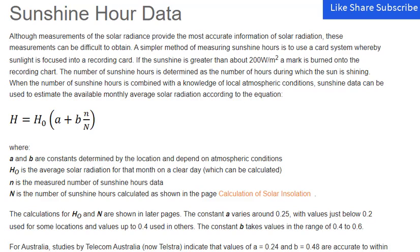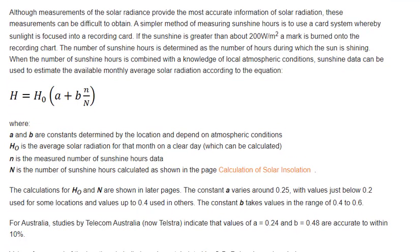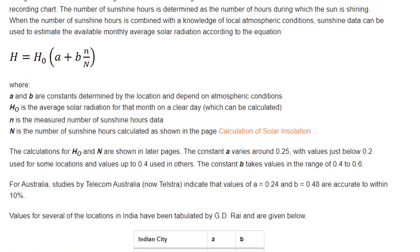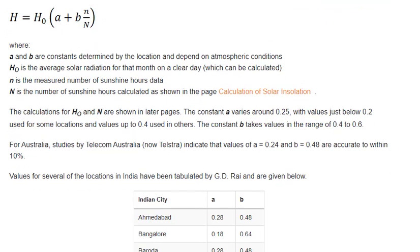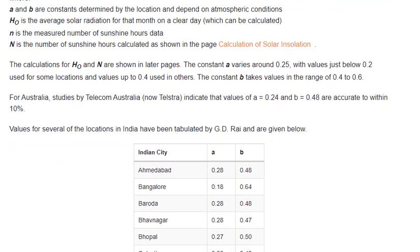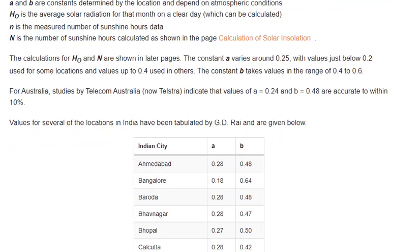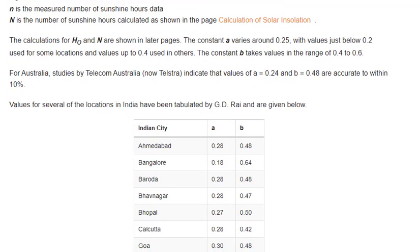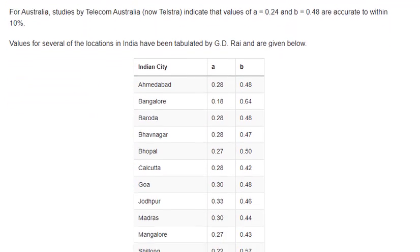The calculations for HO and N are shown in later pages. The constant a varies around 0.25, with values just below 0.2 used for some locations and values up to 0.4 used in others. The constant b takes values in the range of 0.4 to 0.6.